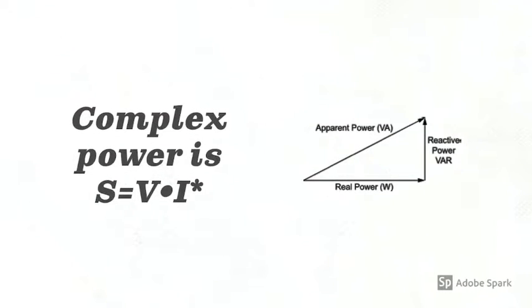The impact on complex power is explained next. Complex power is voltage times current conjugate. Conjugate is to inverse the angle of current.